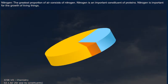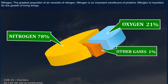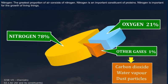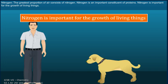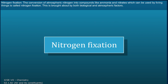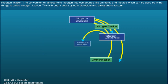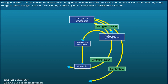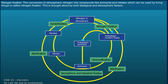The greatest proportion of air consists of nitrogen. Nitrogen is an important constituent of proteins and is important for the growth of living things. Nitrogen fixation is the conversion of atmospheric nitrogen into compounds like ammonia and nitrates, which can be used by living things.